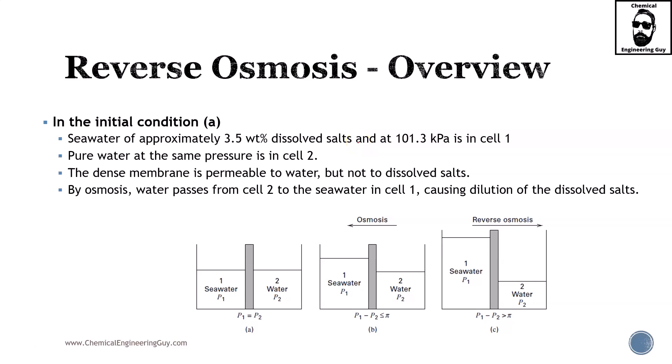Let's check out this diagram. We have three main conditions: one where P1 and P2 are the same, one where the difference in height is due to the osmotic pressure, and one where P1 and P2 — that is, the osmotic pressure — is reversed.